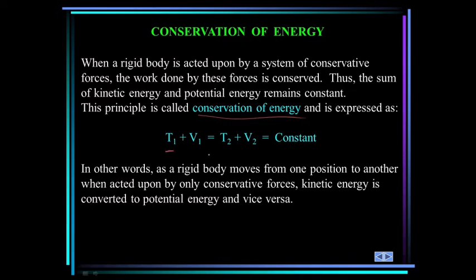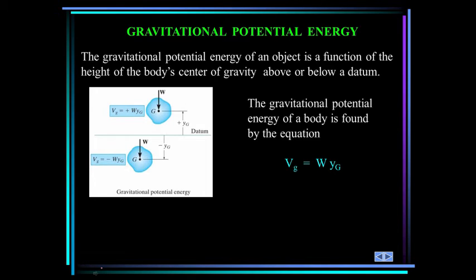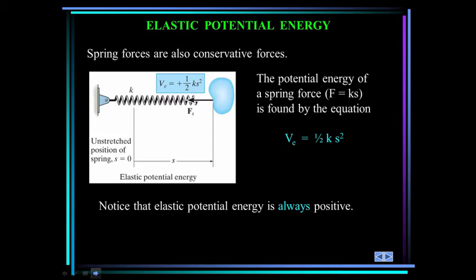Conservation of energy states that kinetic energy at state one plus potential energy at state one equals kinetic energy at state two plus potential energy at state two. The potential energy due to gravity is defined as the weight times the change in height, and this is positive — if you're above the datum, you have more energy than if you were at the datum. The potential energy of a spring is one-half times the spring constant times s squared, measured from the unstretched length. Since s is squared and the spring constant is always positive, the potential energy of a spring is always positive.